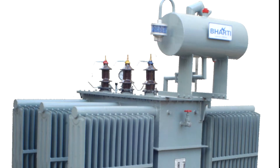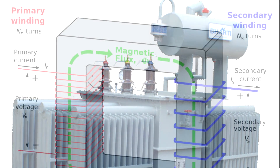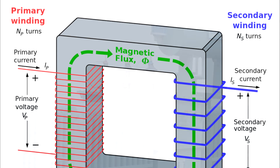You might ask why we can't use transformers for the conversion of DC. To know the answer, I would suggest going through the mutual inductance chapter more thoroughly, especially the part dealing with the variation of the mutual induction process with respect to frequency. An important point to keep in mind is that the frequency is zero when dealing with DC.